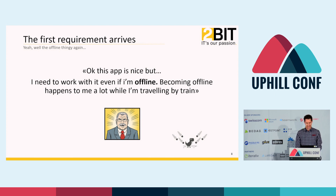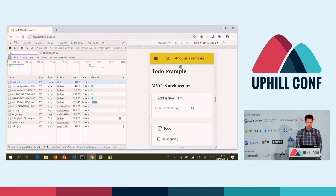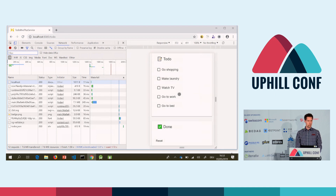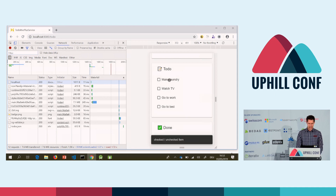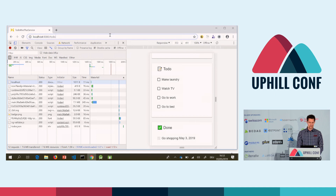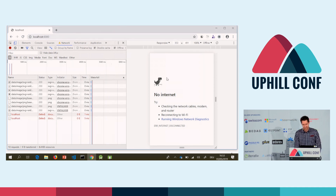Let's test the current application. This is our to-do application — we have some to-do items which are initially loaded. Let's check the experience if we are offline. And this is really amazing — the dino. We love that, but it's really difficult to use a to-do application that way.